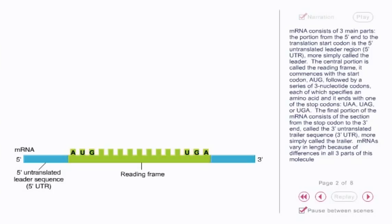The final portion of the mRNA consists of the section from the stop codon to the 3' end, called the 3' untranslated trailer sequence, more simply called the trailer. mRNAs vary in length because of differences in all three parts of this molecule.